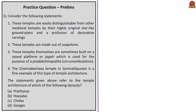The next question is a four-statement question about temples that are easily distinguishable by their highly original star-like ground plans and profusion of decorative carvings; made of soapstone; sometimes built on a raised platform or Jagati used for Pradakshina-patha; and for which the Chennakeshava Temple in Somnathpuram is a fine example. The question asks which dynasty's temple architecture these statements refer to, and the correct answer is Option B — Hoysalas.